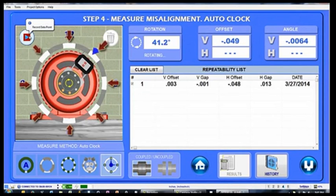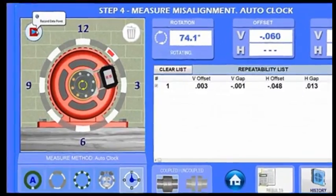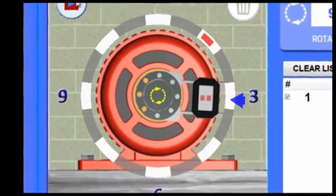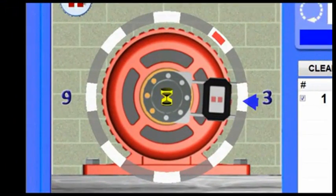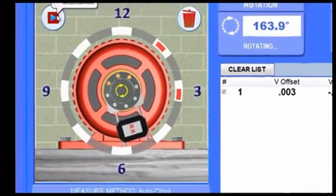To take data, just rotate the shafts to any of the 8 clock positions in any order. You can even skip points. An arrow will tell you when the target is in the data taking zone and ready to record a point. So just hit the record button and a color coded dot will appear in the data indicator ring so you know what point has been recorded.